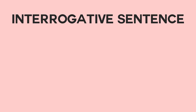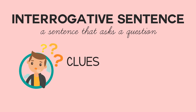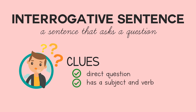What is an Interrogative Sentence? An Interrogative Sentence is a sentence that asks a question. We have some clues on how we can identify these types of sentences. First, these questions ask a direct question. They contain a subject and verb. And of course, they end in a question mark.